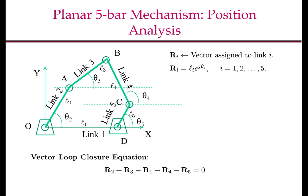Let us look at the planar five-bar mechanism. Link 1 has length L1, link 2 has L2, and so on. θ₂, θ₃, θ₄, and θ₅ are all measured positive anticlockwise. The vector directions are O2A, AB, CB, and DC. I have assigned a vector to each one of the links, and the vector Ri equals Li·e^(jθᵢ), where Ri is the vector assigned to link i. So the vectors are R2, R3, R4, R5, and R1.